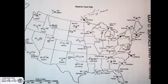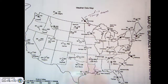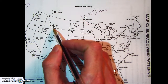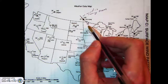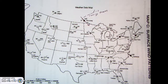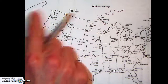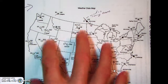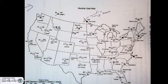Then we get to surface wind patterns. Remember, you're going to draw a line showing where the wind is going — the line on the station model represents where the wind is coming from, but we're going to add an arrowhead to show where the wind is moving towards. Then it asks you to draw larger arrows to show the general pattern of wind flow around high and low pressure.